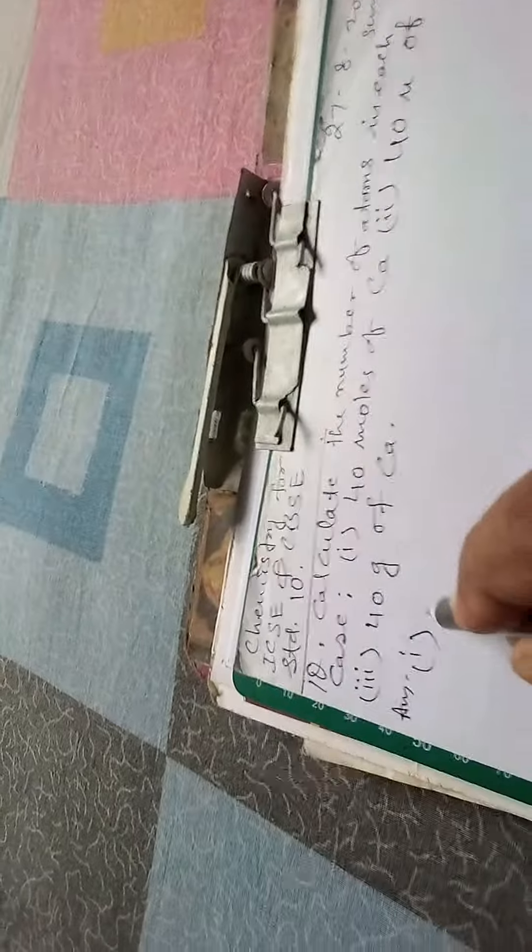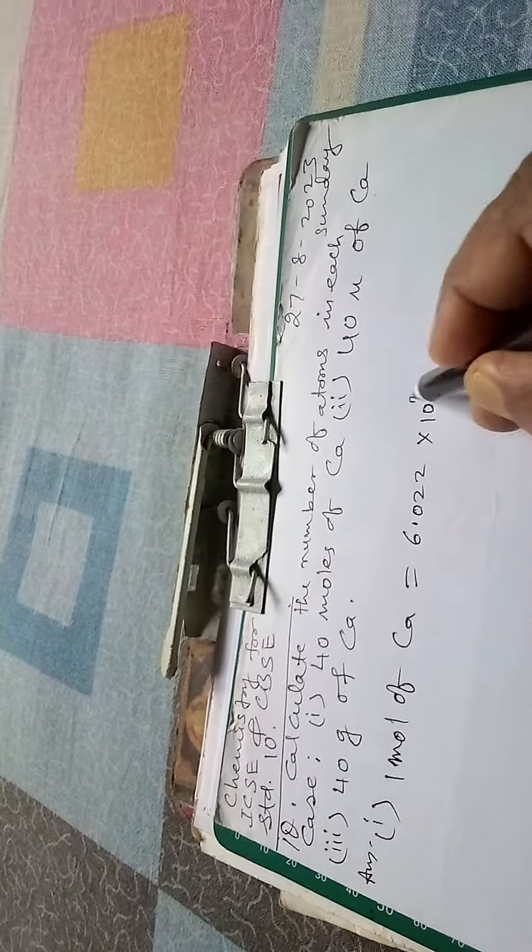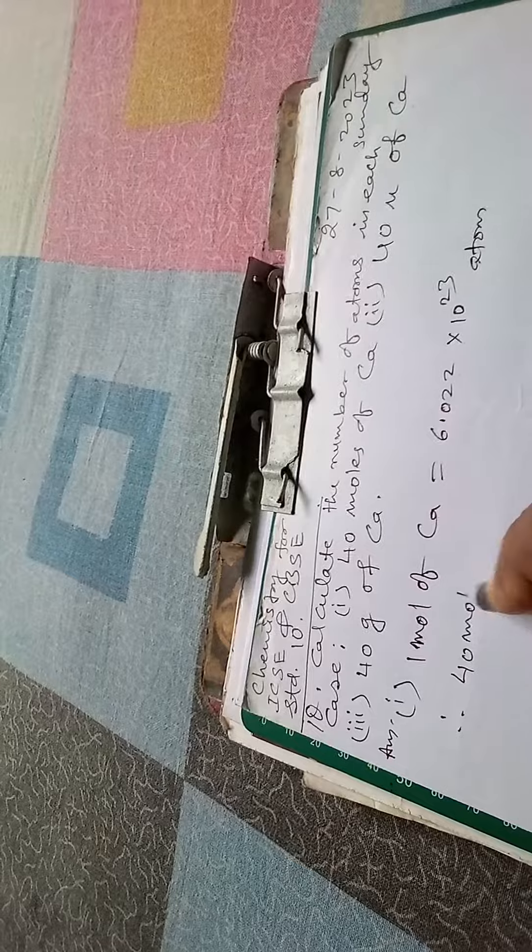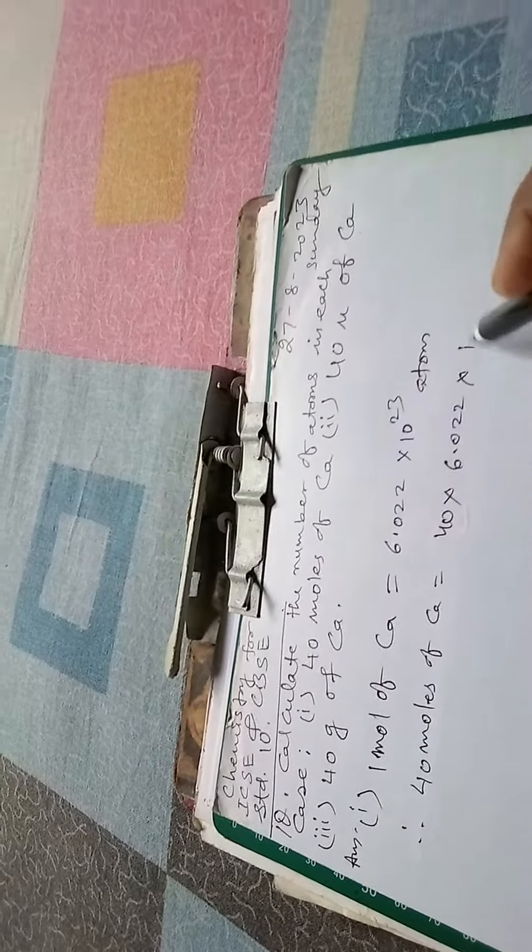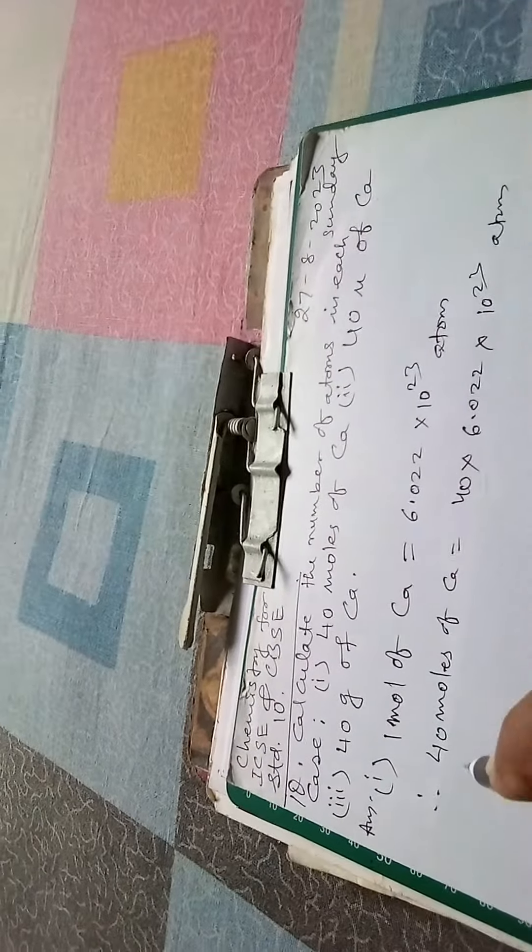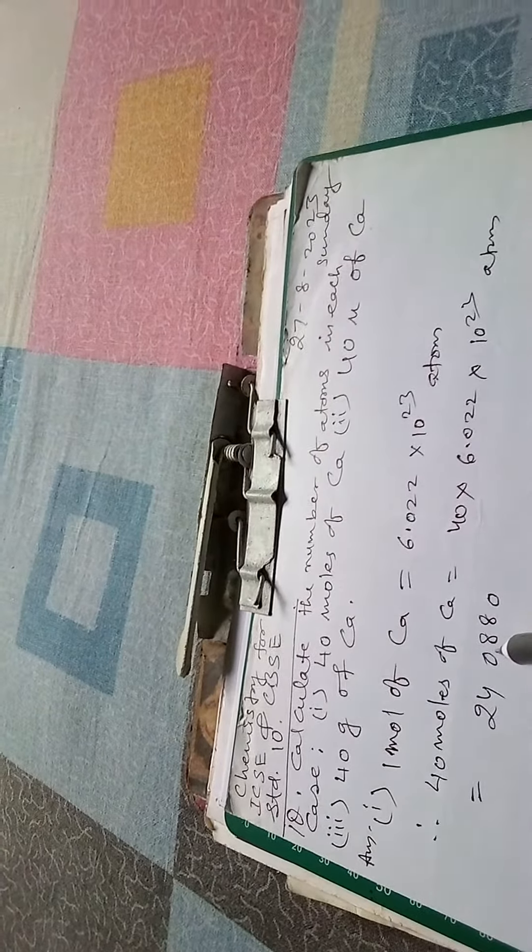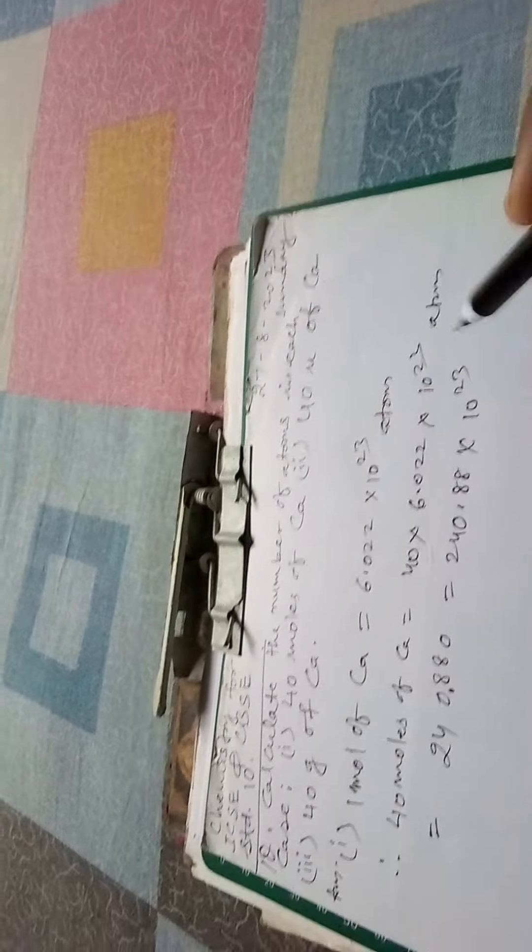So first, you know that one mole of calcium is equals to 6.022 into 10 to the power 23 atoms. Therefore, 40 moles of calcium is equals to 40 into 6.022 into 10 to the power 23 atoms, and that is equals to 0, 8, 8, 0, 24 and decimal will be here, and that is equals to 240.88 into 10 to the power 23 atoms.